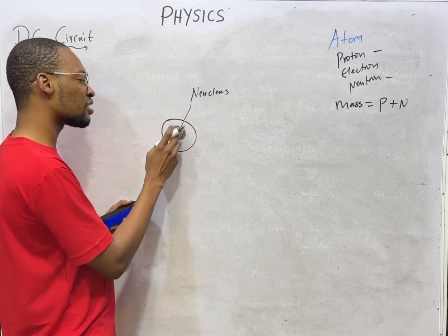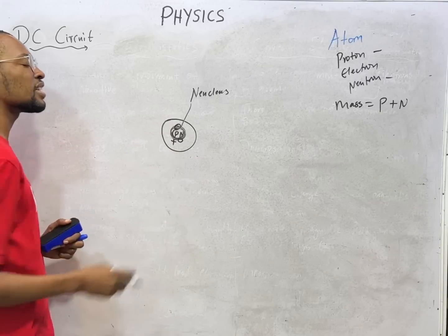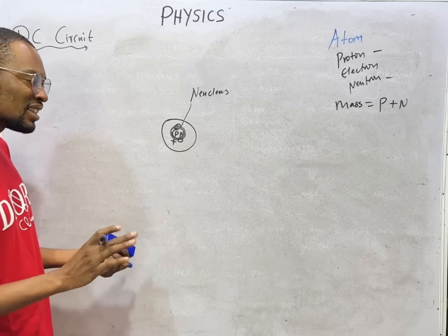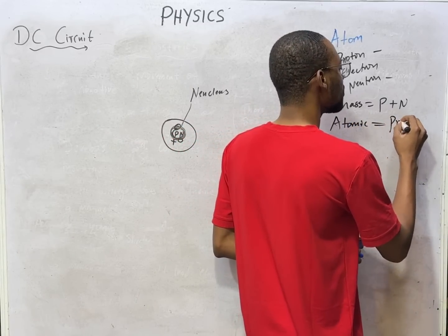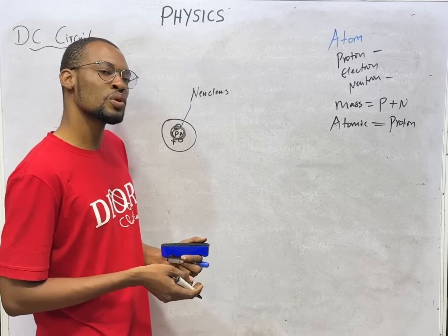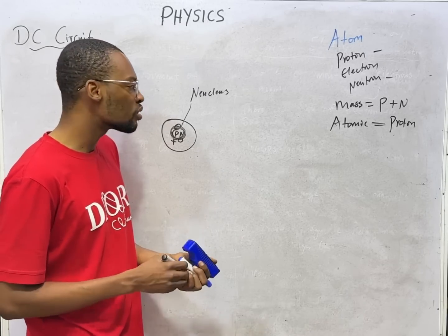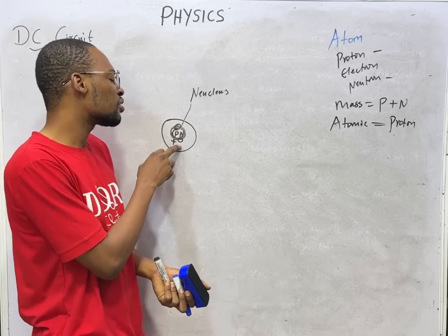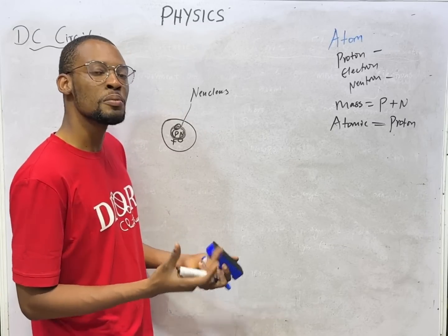Drawing the atom, the first shell — called the K shell — can carry a maximum of two electrons. The first element is hydrogen and the second is helium. The atomic number of any element is the number of protons it has. Hydrogen has one proton so its atomic number is one; helium has two protons so its atomic number is two. When an atom is neutral, the number of protons equals the number of electrons.